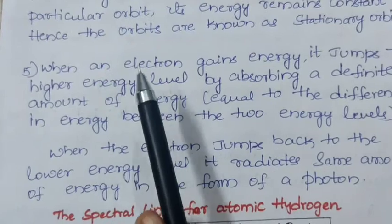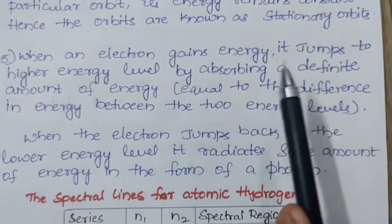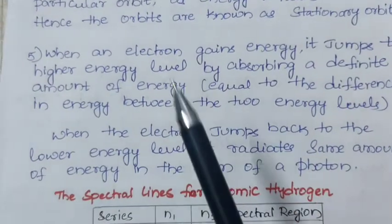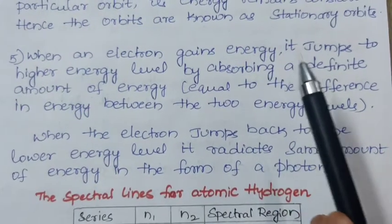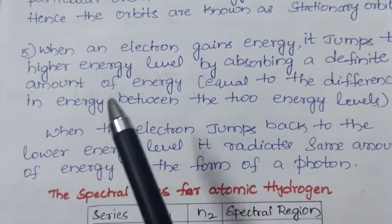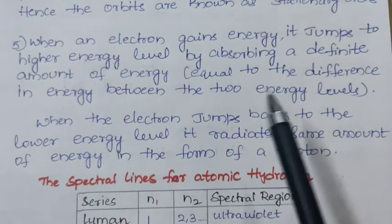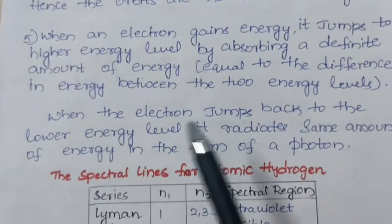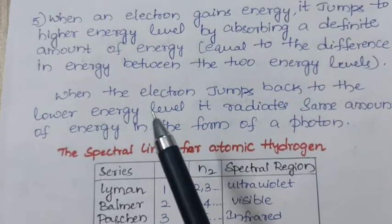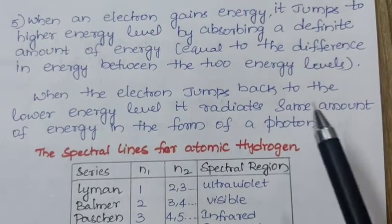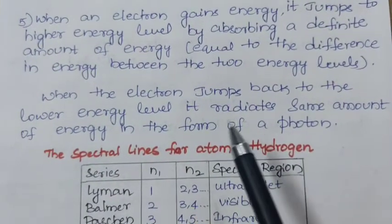Fifth point: when an electron gains energy, it jumps to higher energy level by absorbing a definite amount of energy, which is equal to the difference in energy between the two energy levels. When the electron jumps back to the lower energy level, it radiates same amount of energy in the form of a photon.